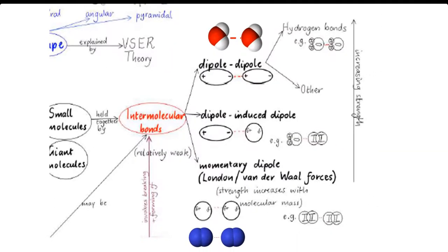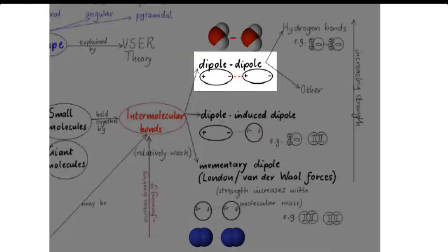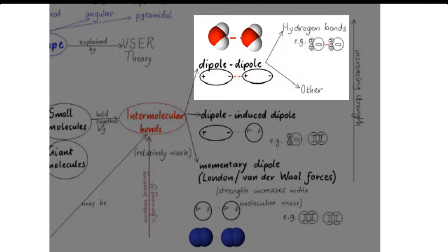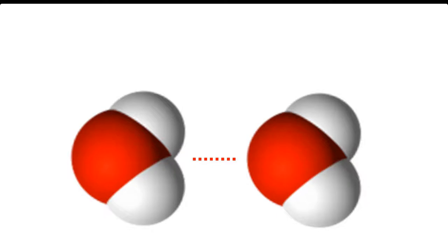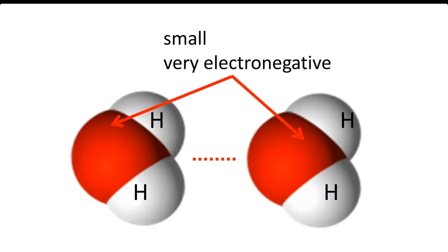The intermolecular force between two polar molecules is called a dipole-dipole intermolecular force. A subset of this is the hydrogen bond, which is a particularly strong dipole-dipole force. Hydrogen bonds occur between molecules which have hydrogen bonded covalently to a small, highly electronegative atom, such as oxygen. Since water consists of hydrogen bonded covalently to oxygen, water molecules are held together by hydrogen bonds.